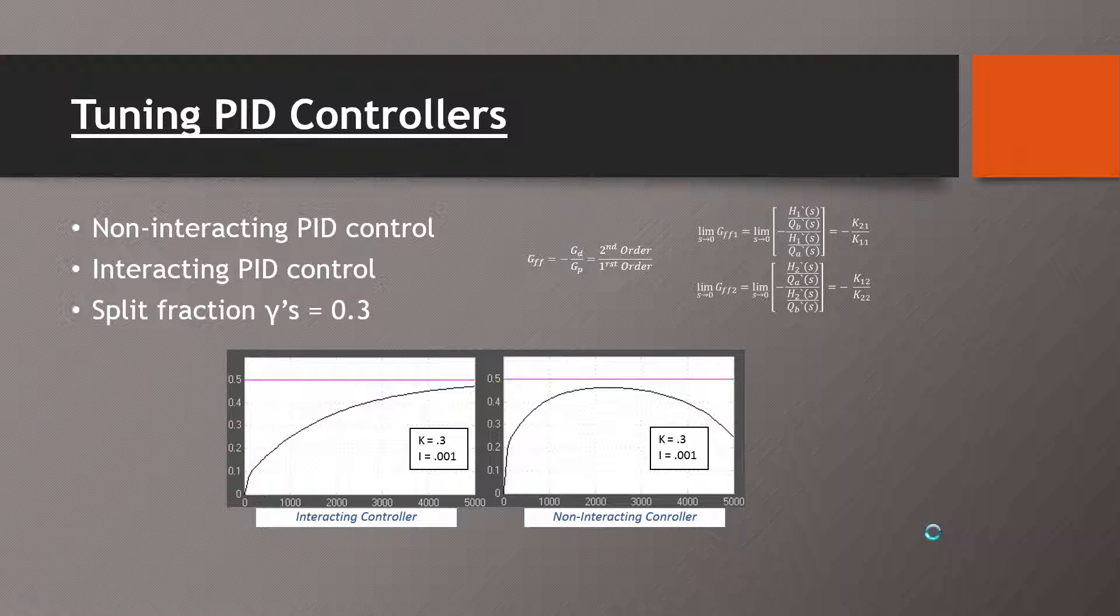Now we're going to talk about the PID tuning. We did both a non-interacting and interacting PID control. We set the split fractions to 0.3 and just analyzed changes in set points. As you can see on the top right, our feed forward control ended up being a second order transfer function over a first order transfer function, and we were only able to use a feed forward gain.